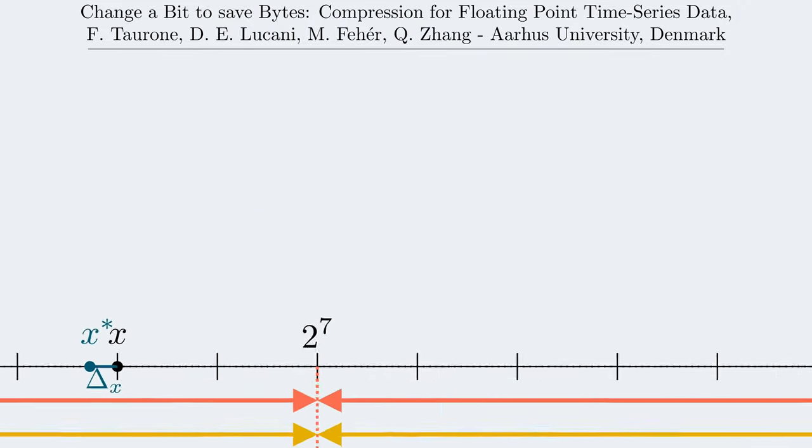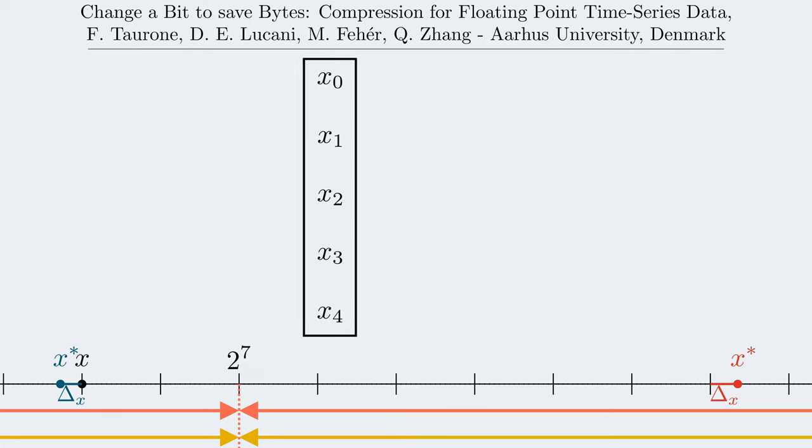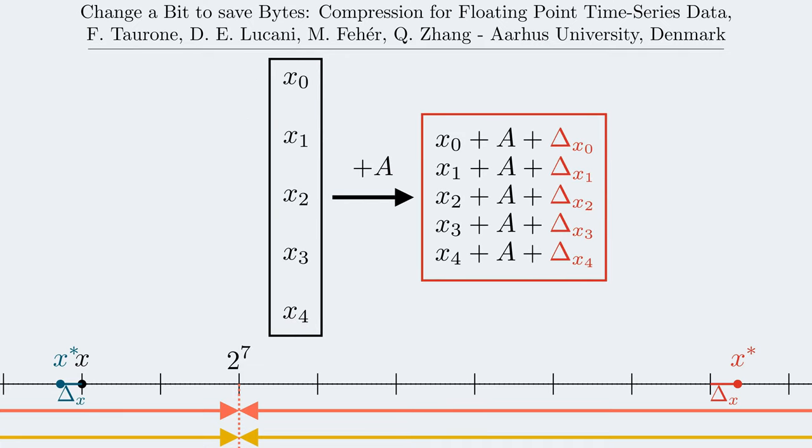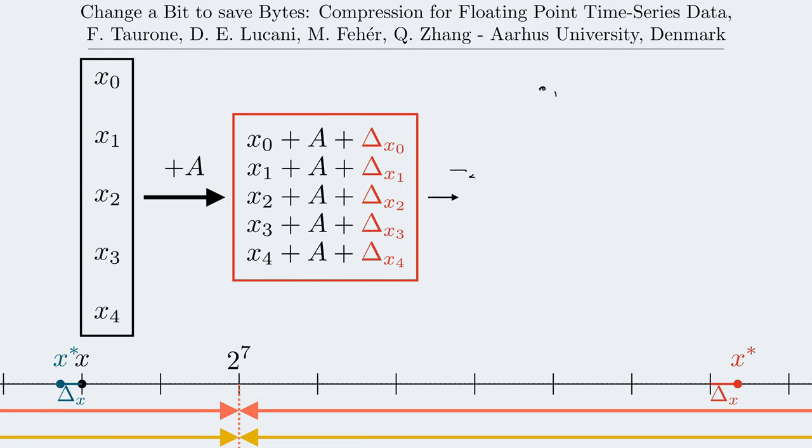Therefore, from the original dataset, when we apply the addition transform, we get numbers that are more compressible than the original due to the shared portion of bits in their binary representation, and the recovered numbers will be slightly skewed from the original ones.